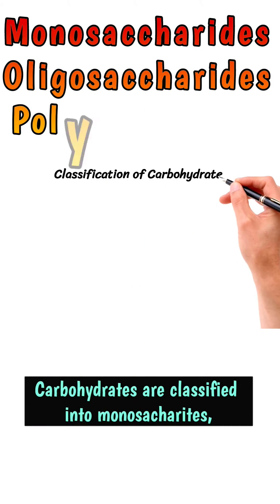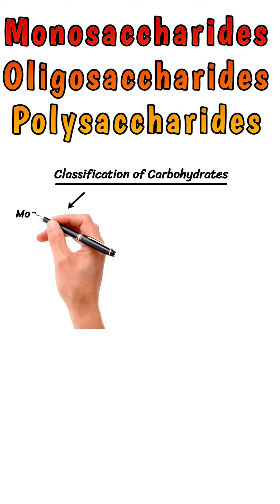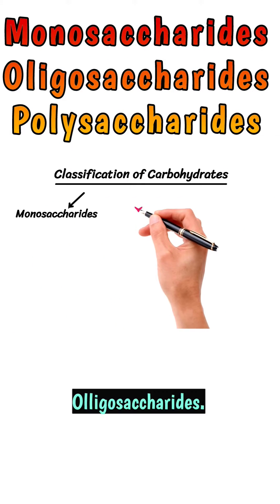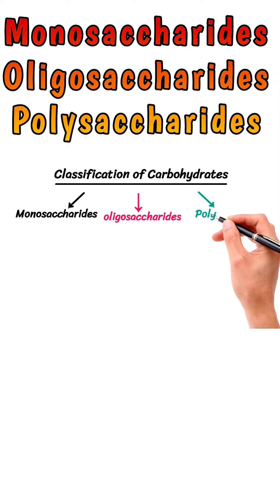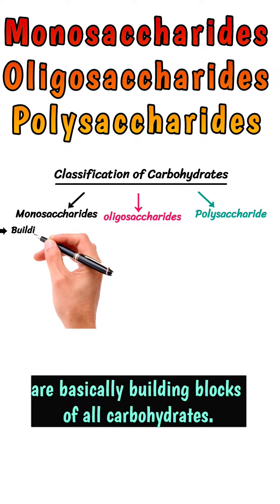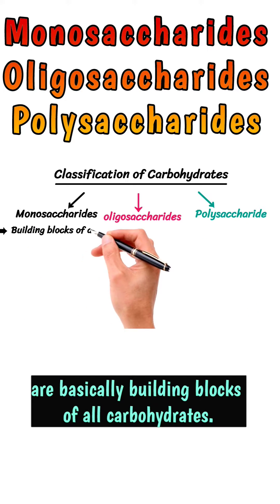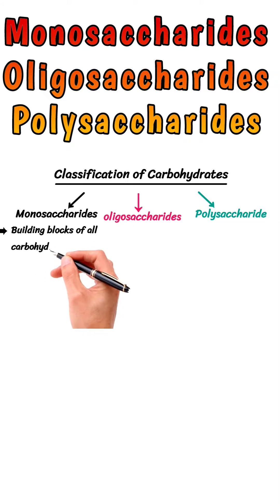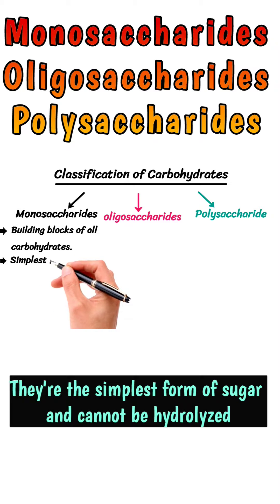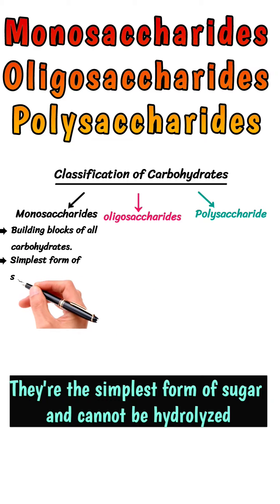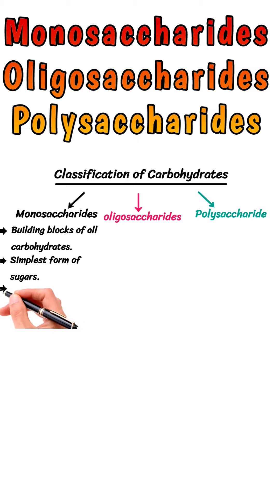Carbohydrates are classified into monosaccharides, oligosaccharides, and polysaccharides. Monosaccharides are basically the building blocks of all carbohydrates. They are the simplest form of sugar and cannot be hydrolyzed.